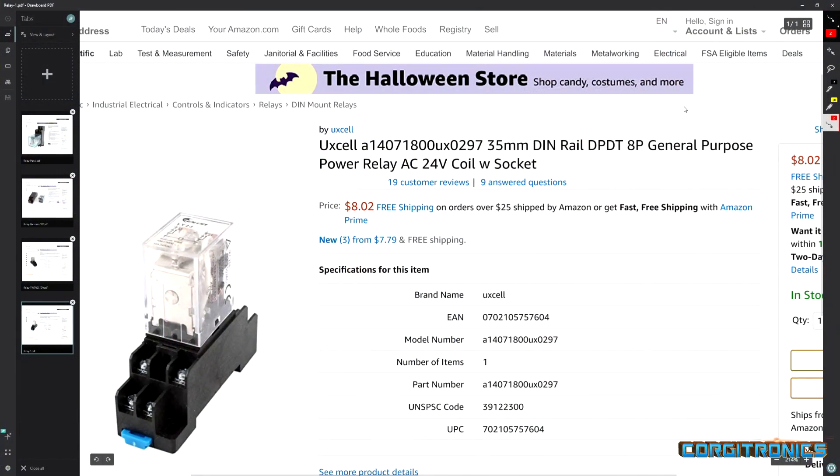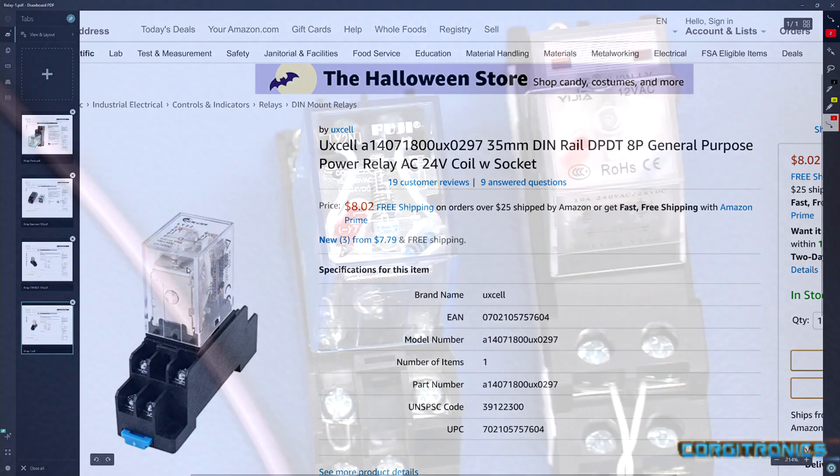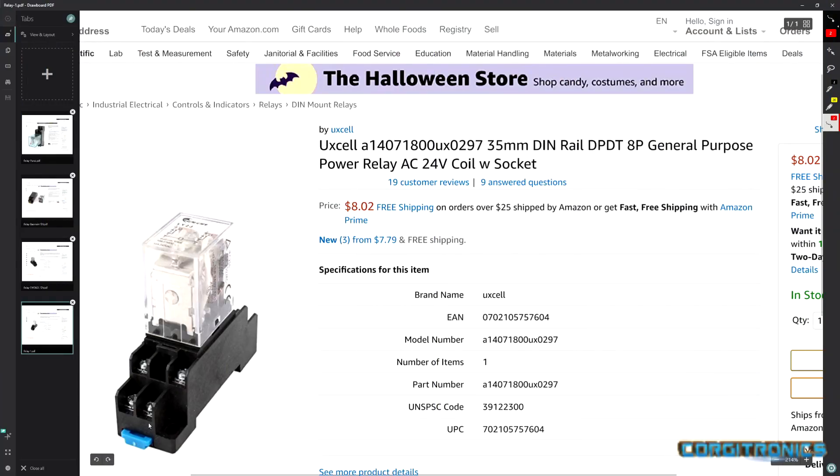If you want one that definitely works, try one of the ones that doesn't have that relay indicator on it. However, it does look remarkably like this one right here. This UXL A-14071800 UX-0297 35mm DIN rail mount DPDT-8P General Purpose Power Relay. How you're going to guarantee that you get the same one, I don't know. But this one is the one that does not have the LED indicator on it. So that DIN rail tab on mine is in orange. However, in the listing, it is shown as blue. So again, mixed bag, even from regular suppliers like UXL, who I've had no problem with their products, they've always come through on time, delivered on time without any issues. The products have worked as advertised. And in this case, it works much better.